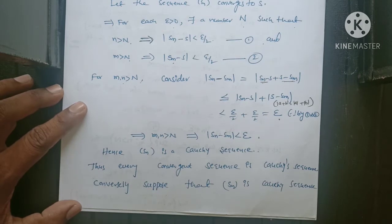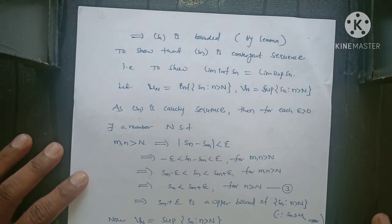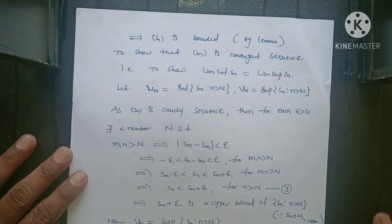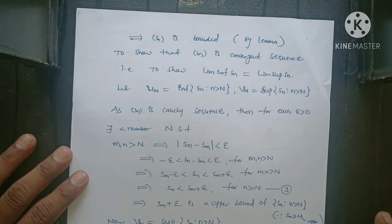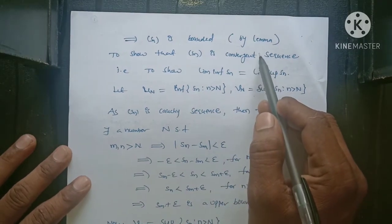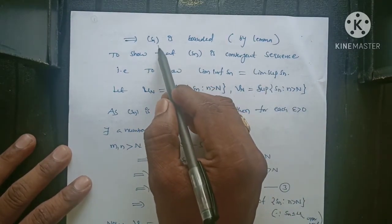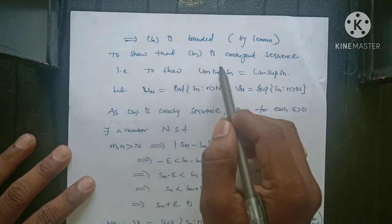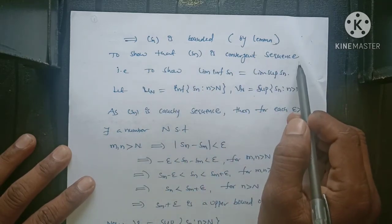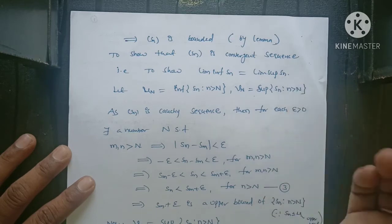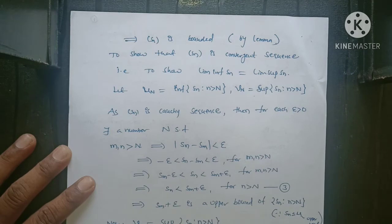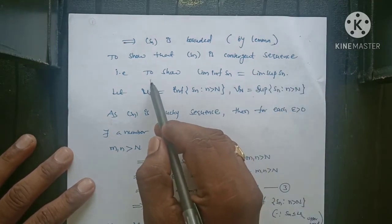Now the converse part. Conversely, suppose that Sn is a Cauchy sequence. We have a lemma: Sn is bounded. Every Cauchy sequence is a bounded sequence — already we proved this theorem. Sn is a Cauchy sequence, so every Cauchy sequence is a bounded sequence. Now, to show that Sn is a convergent sequence — the converse part states every Cauchy sequence is convergent.